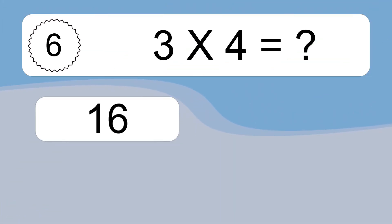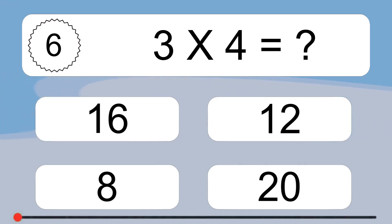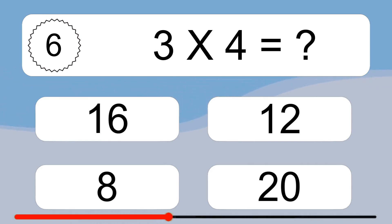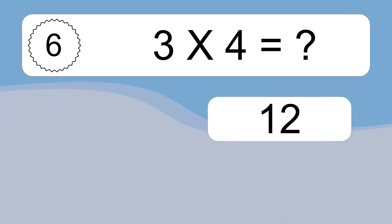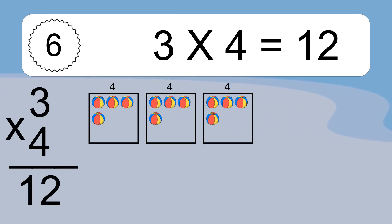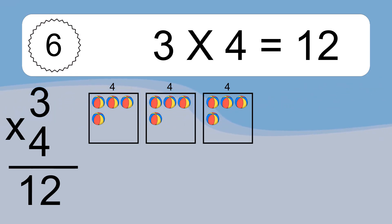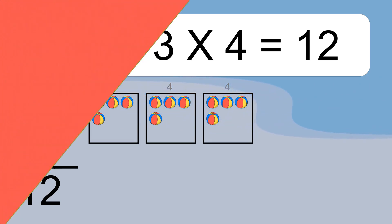3 times 4 equals what? Three times four equals twelve. We have three boxes and each box has four colorful balls inside. If you count all the balls in all the boxes together, you will have three times four balls. This equals twelve balls.